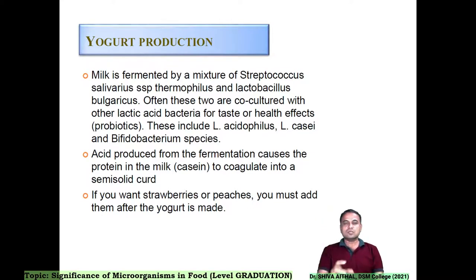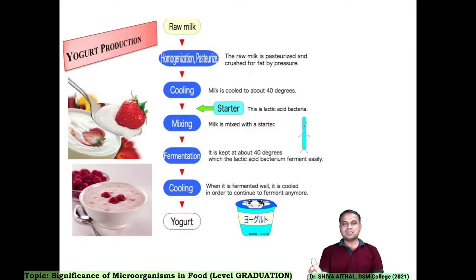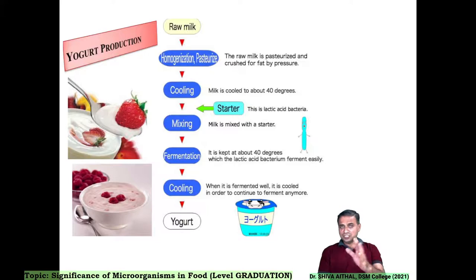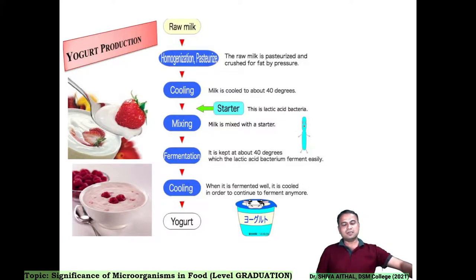How yogurt differs from curd: in curd it is a general mixed culture without a specific type of bacteria. When you add a known pure culture — yogurt uses a co-culture or consortium — there is a difference between mixed culture which is not pure, and a consortium, which is a defined mixture of known quality, quantity, and number. This fermentation produces acid and causes the protein in the milk to coagulate into a semi-solid curd. At this point different flavors like strawberry or peach can be added. Raw milk is pasteurized, cooled, starter culture is added, fermentation is carried out, then cooling is done.